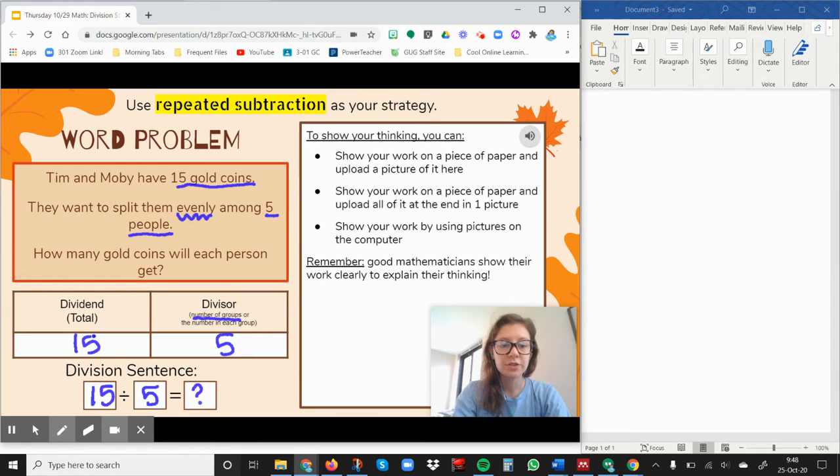So to solve this I'm going to use our strategy of repeated subtraction. And here's how we do repeated subtraction. Division is essentially repeated subtraction because we're repeatedly taking away equal groups until we have none left. Just like multiplication is essentially repeated addition, division is essentially repeated subtraction.